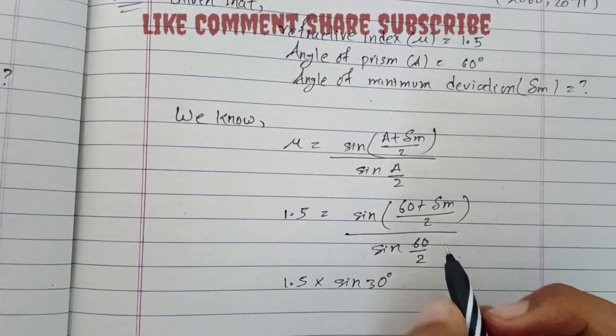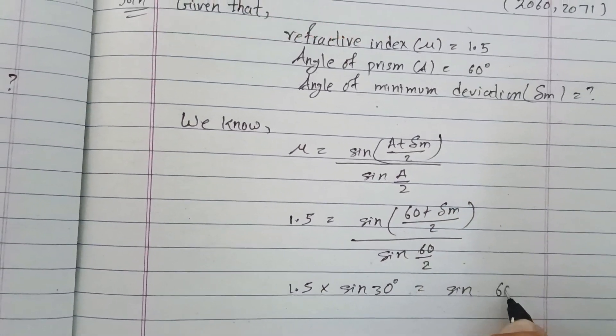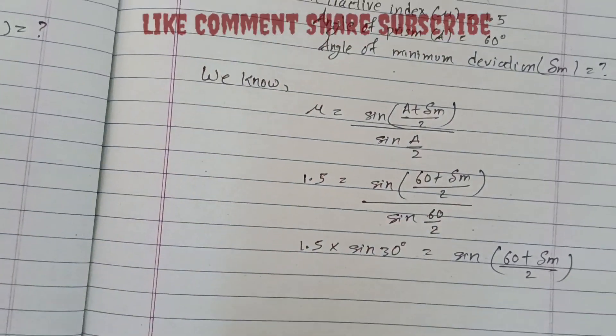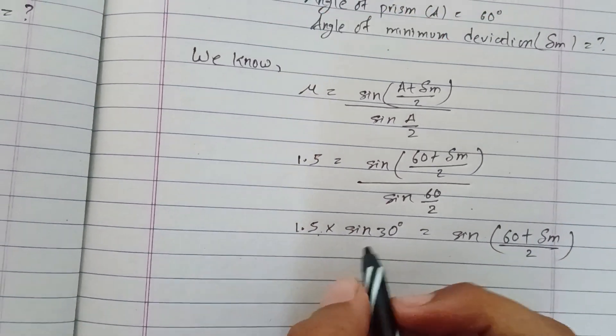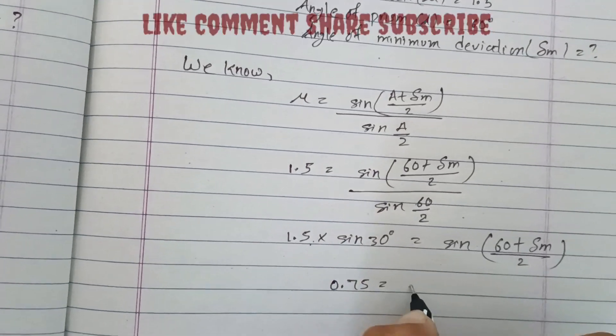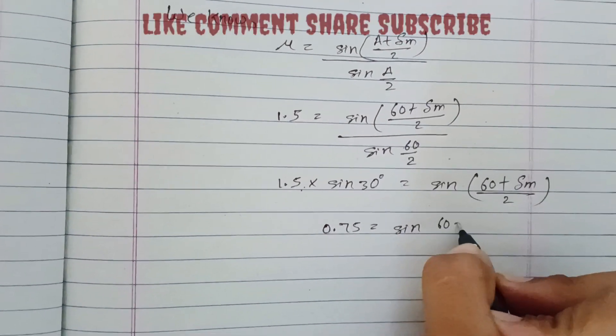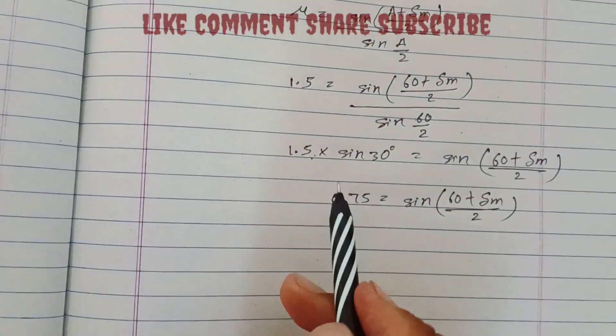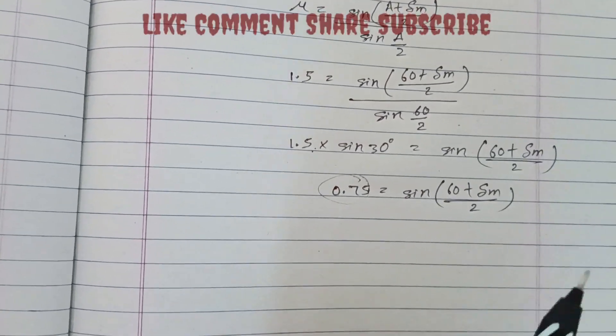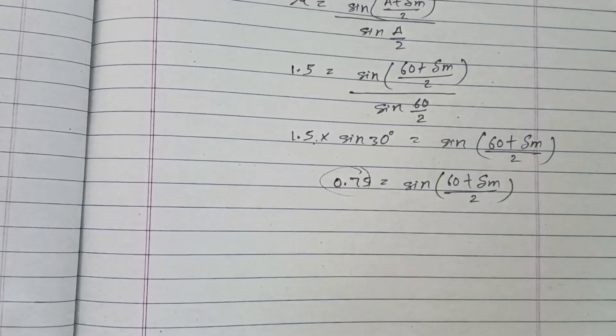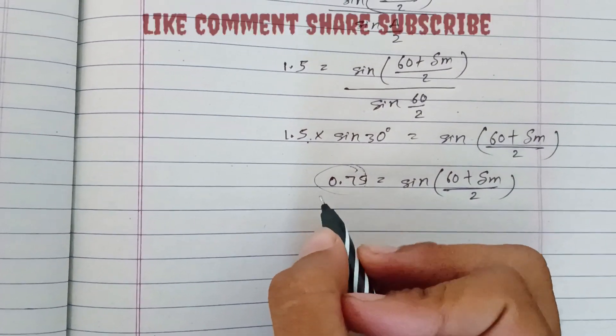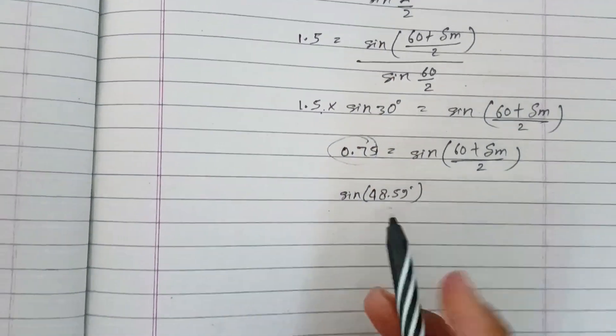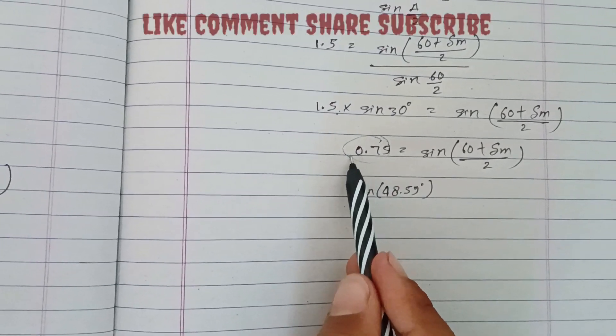This equals sin((60 + δm)/2). So 1.5 × sin 30 = 0.75. Converting to degrees using sin inverse of 0.5 gives 48.59 degrees.